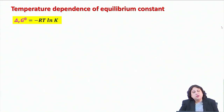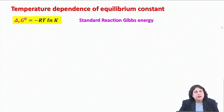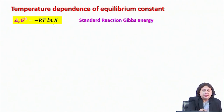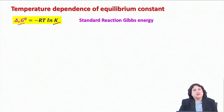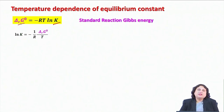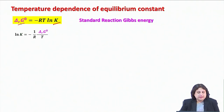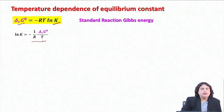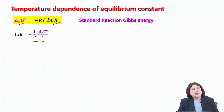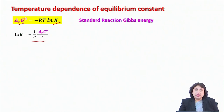We start from the expression that defines the equilibrium constant in terms of the standard reaction Gibbs energy at a given temperature. This equation tells you that K depends on the standard reaction Gibbs energy. Rewriting algebraically: ln K equals minus (1/R) times (delta_R G naught divided by T). Obviously, K is a function of temperature.